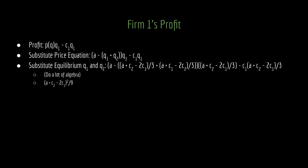A couple of quick comparative statics: firm 1's profit goes up as firm 2's marginal cost of production increases, because firm 1 is able to exploit that weakness from firm 2. But firm 1's profit declines as its own marginal cost increases. Firm 2's profit is easy to derive by symmetry — just flip the subscripts. Firm 2's profit is (A + C1 − 2C2)² / 9. There's a nice mirroring between firm 1 and firm 2.